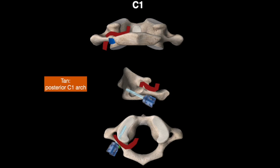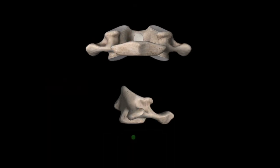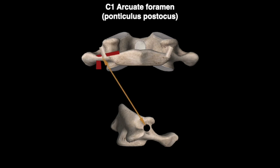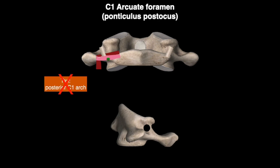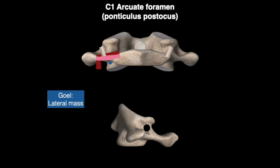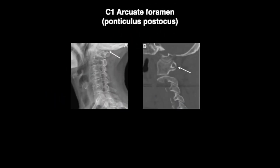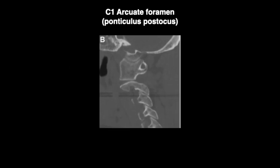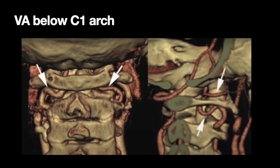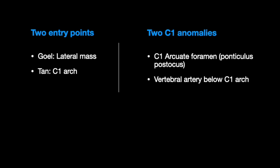To choose the appropriate entry point, two vertebral artery anomalies need to be known, assessed by CT angiogram. The first is C1 arcuate foramen, known as C1 ponticulus posticus — a bony bridge on C1 that covers the vertebral artery groove, found in 3-15% of patients. Placing a lateral mass screw using the Tan entry point can cause vertebral artery injury in this case. The second anomaly is when the V3 segment of the vertebral artery passes below the C1 posterior arch, in which case the Goel entry point should be avoided.